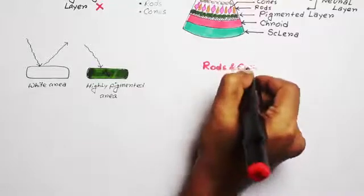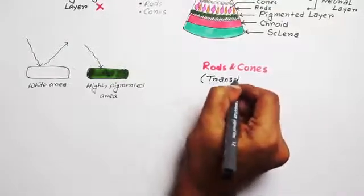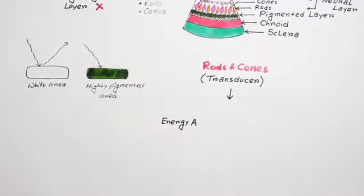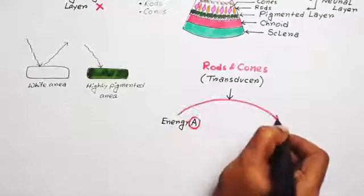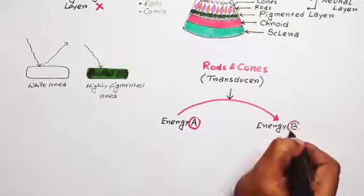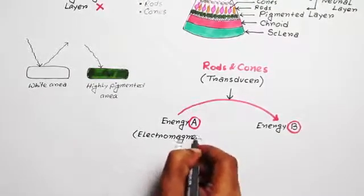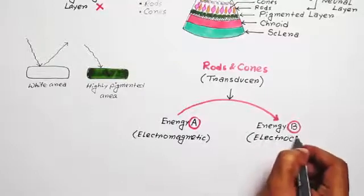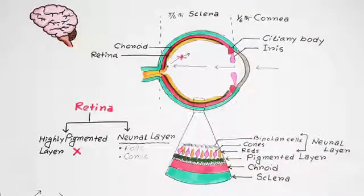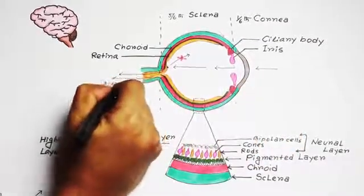So, what are rods and cones? They are a special type of transducers. You know what transducers are? It is a special entity which can convert one type of energy to another type of energy. Light is electromagnetic energy. When light falls on the rods and cones, they get activated and produce action potential.